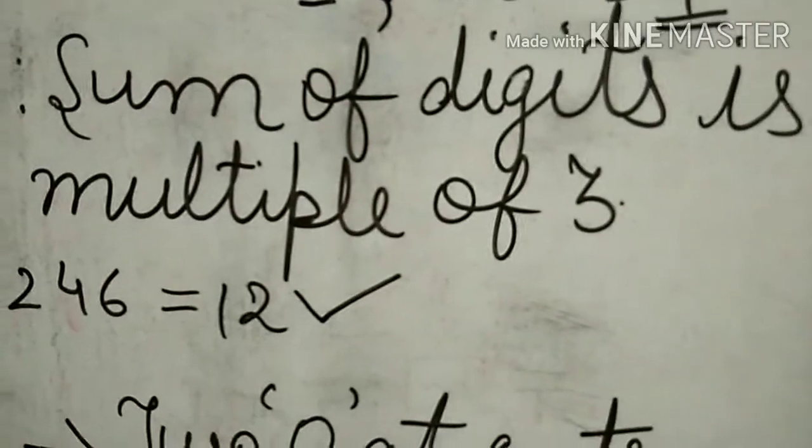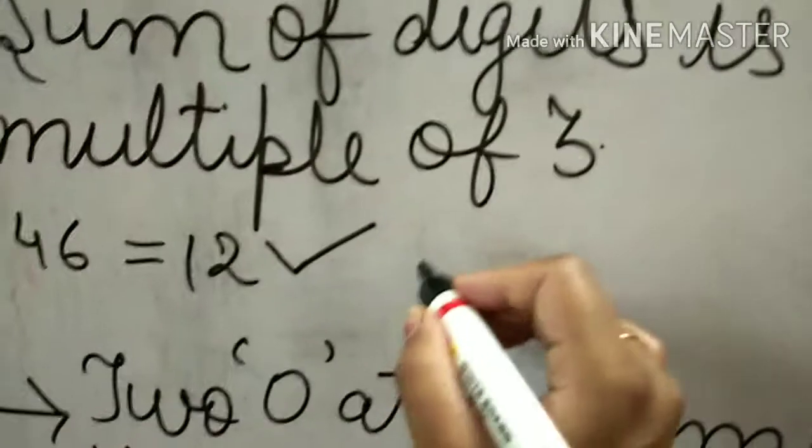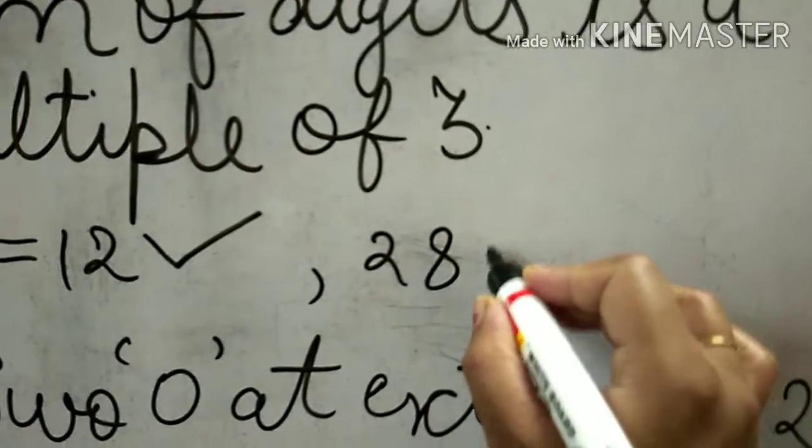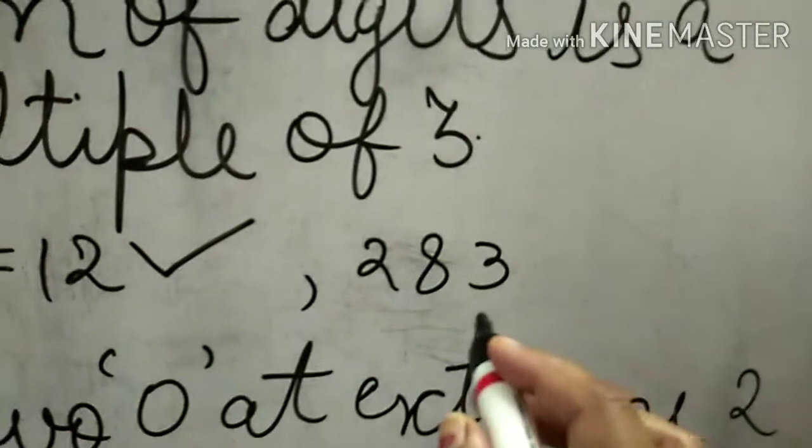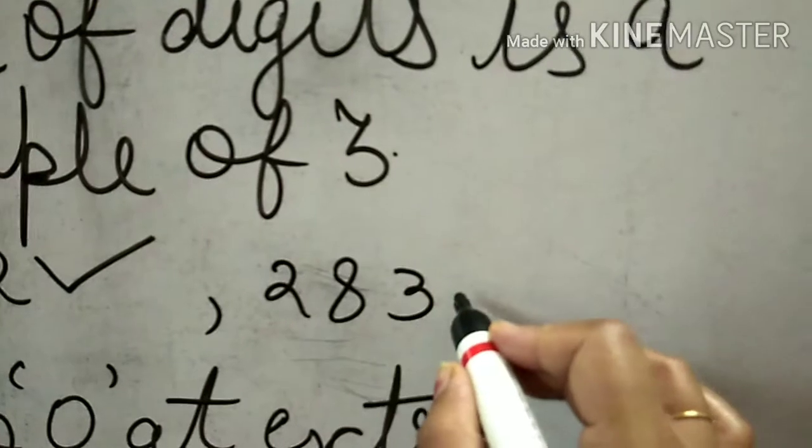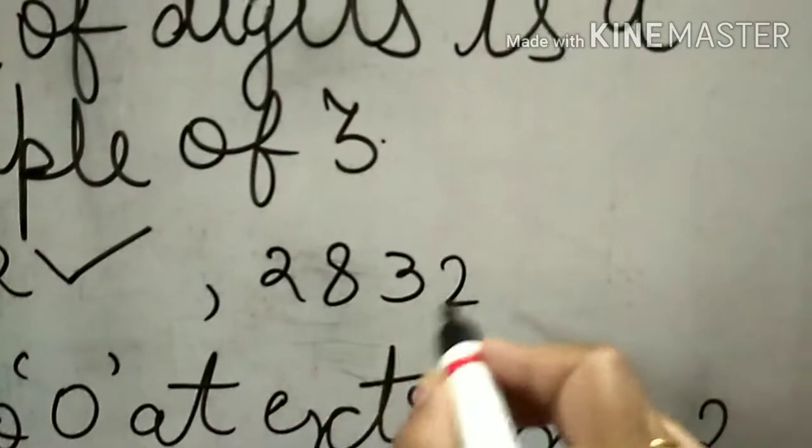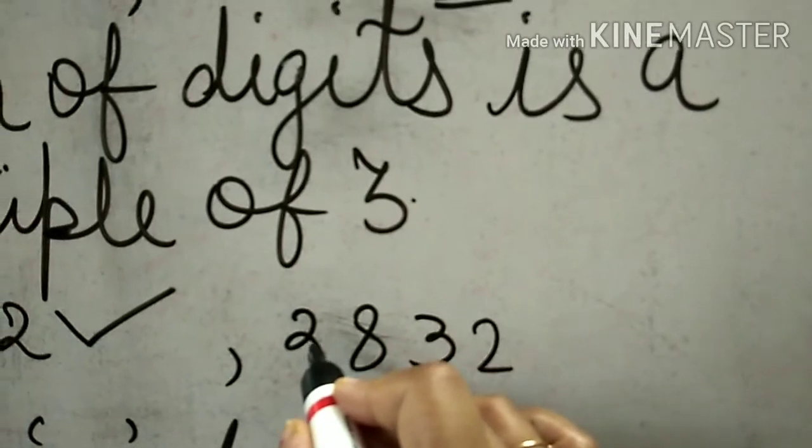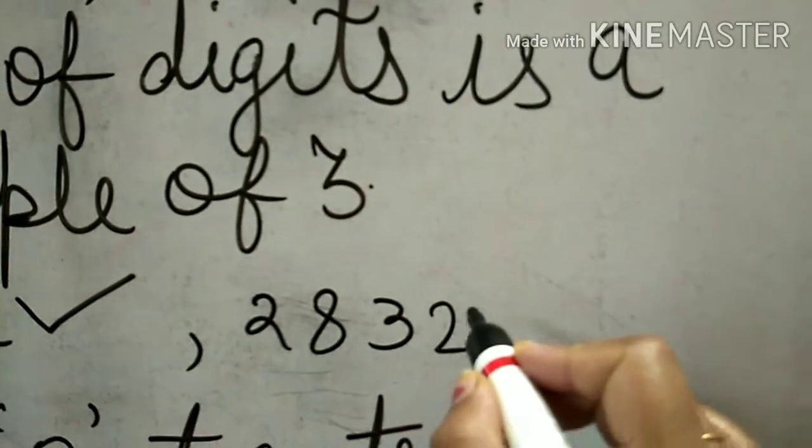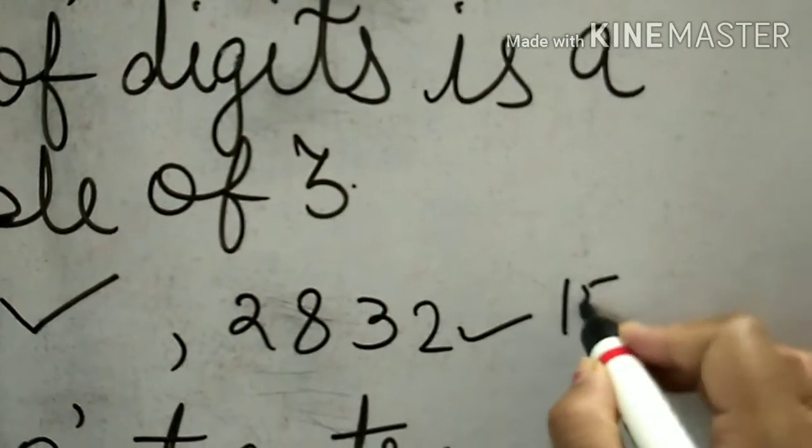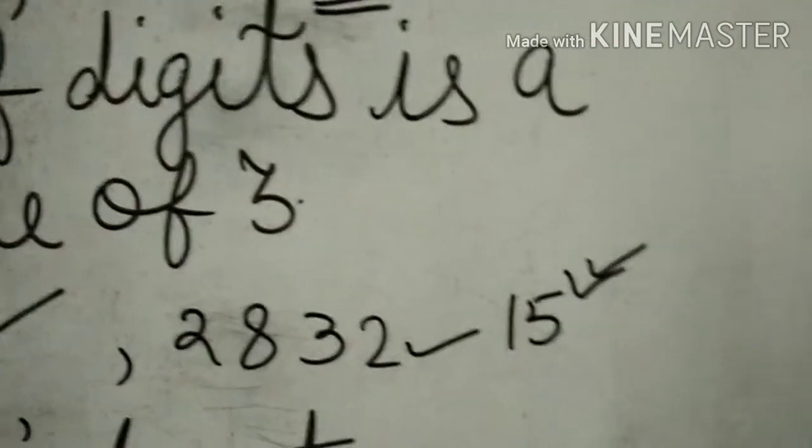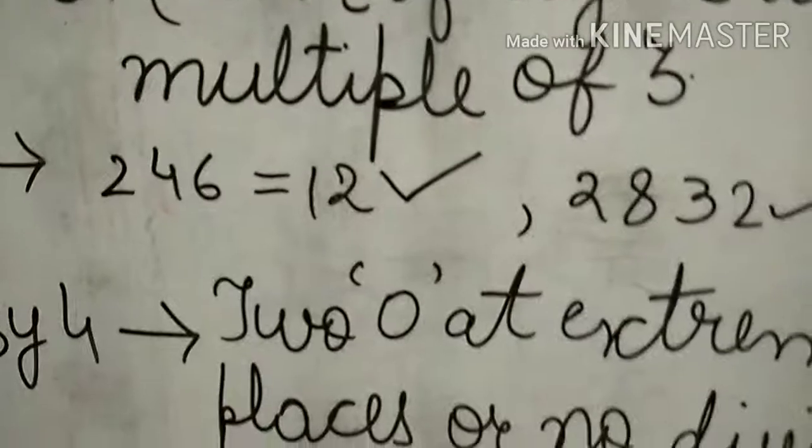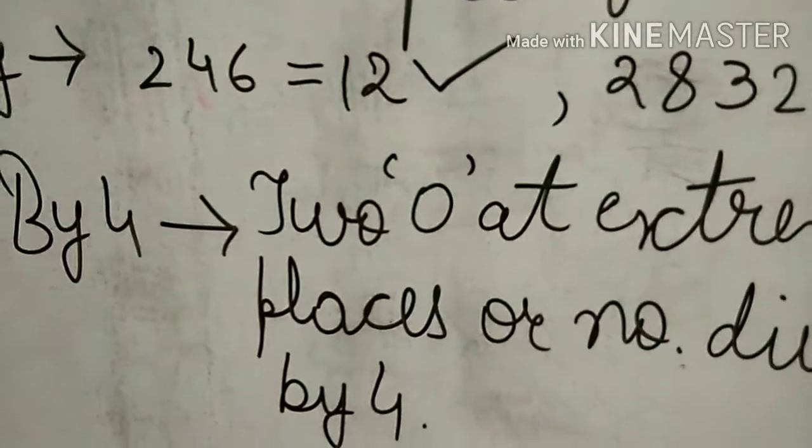If we take another number like 2832, we add the digits: 8 plus 2 equals 10, plus 3 equals 13, plus 2 equals 15. The sum is 15, and 15 is also a multiple of three, so this number is also completely divisible by three.